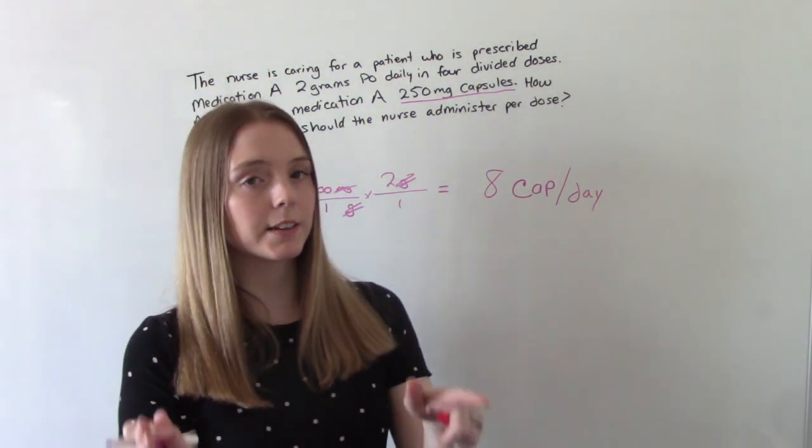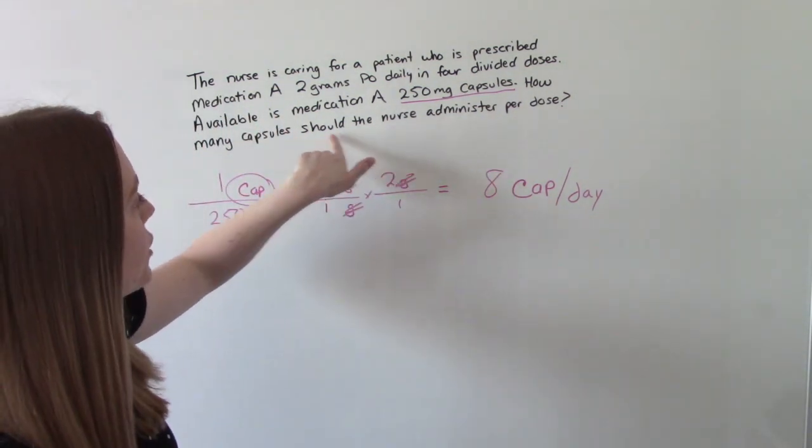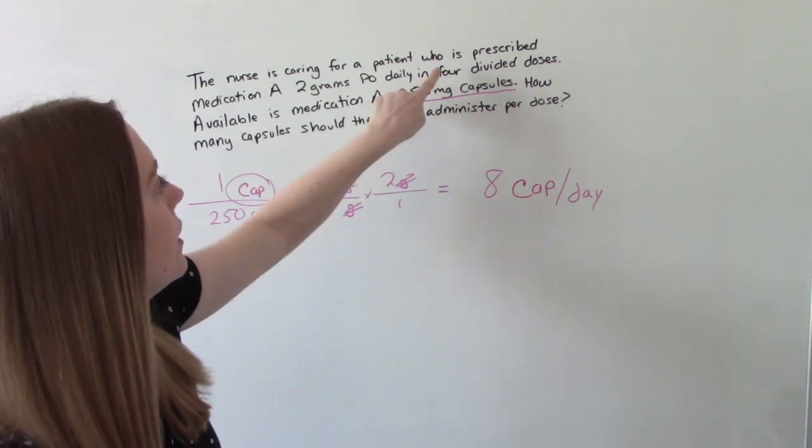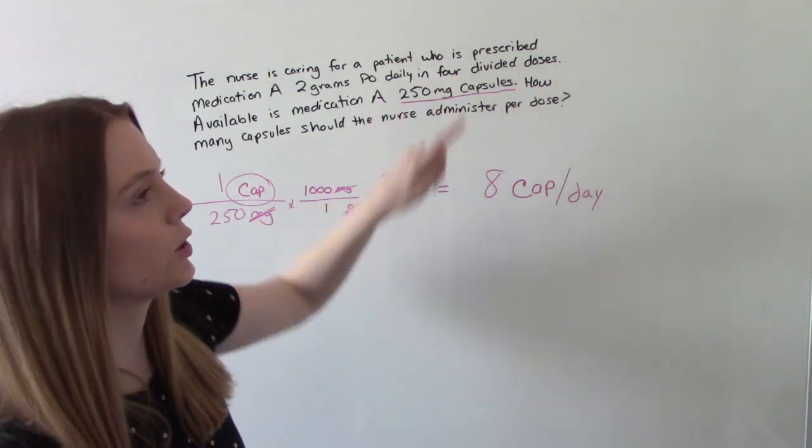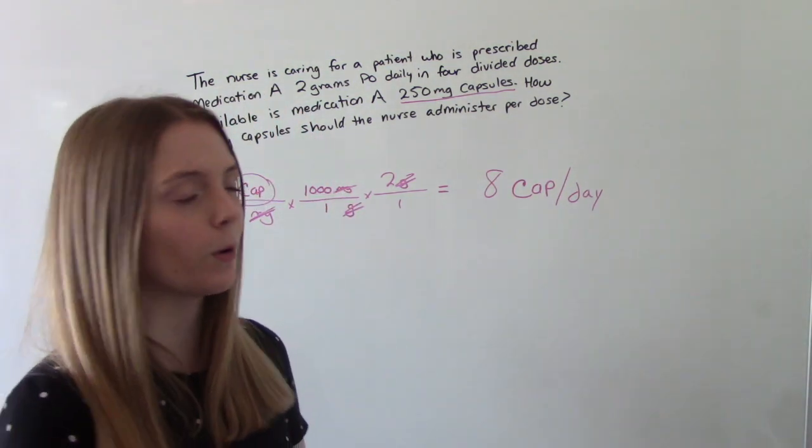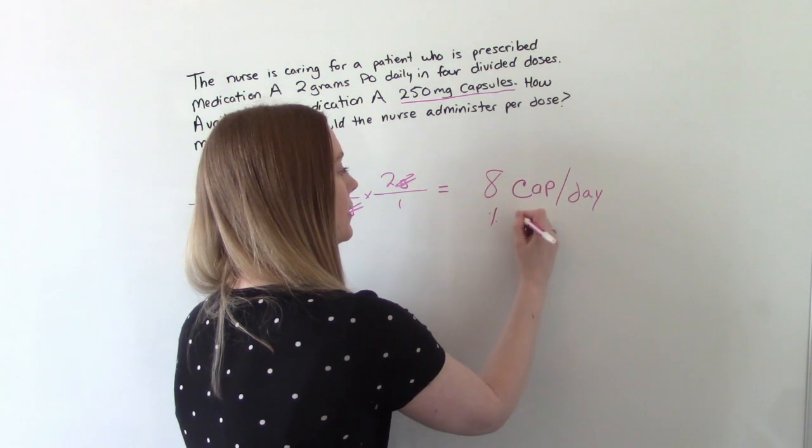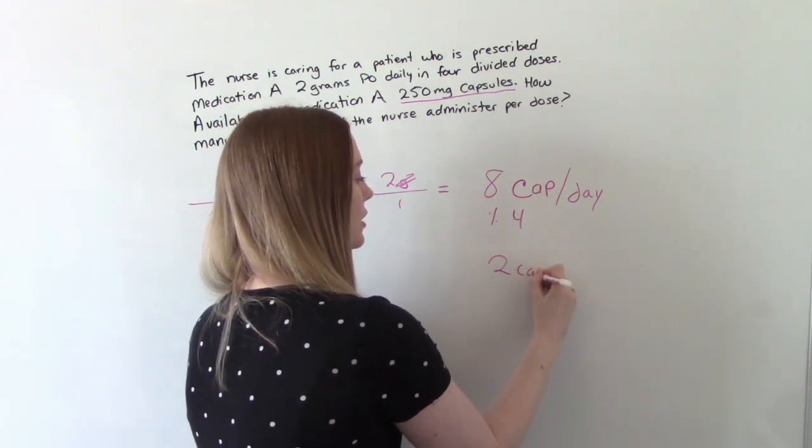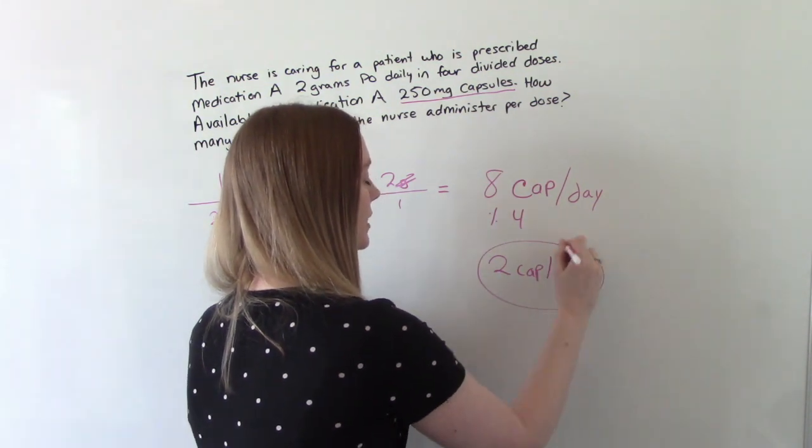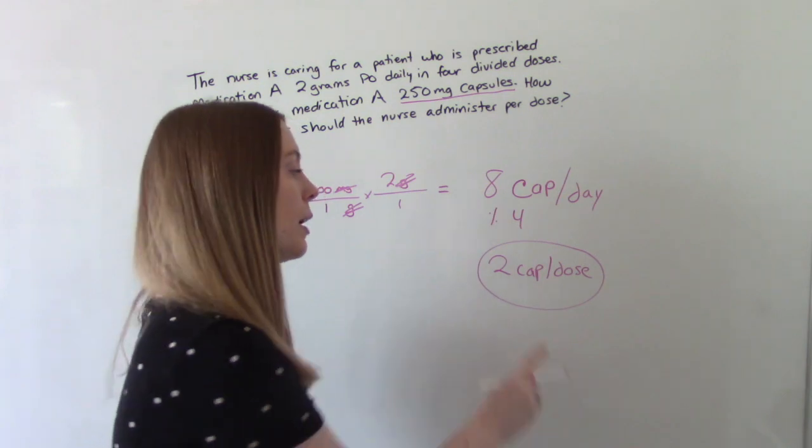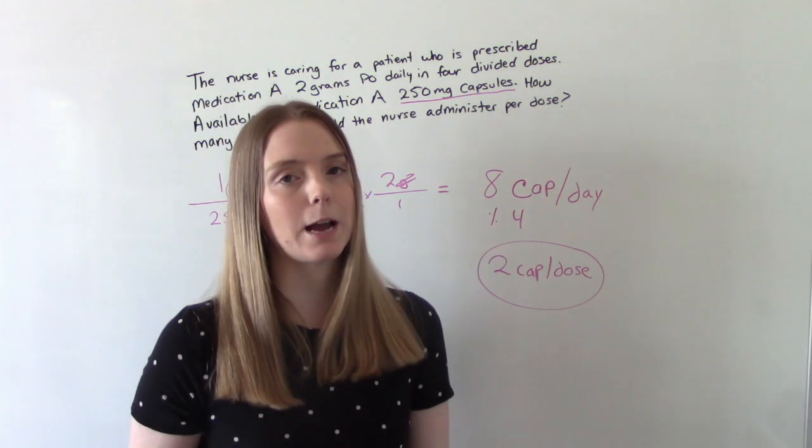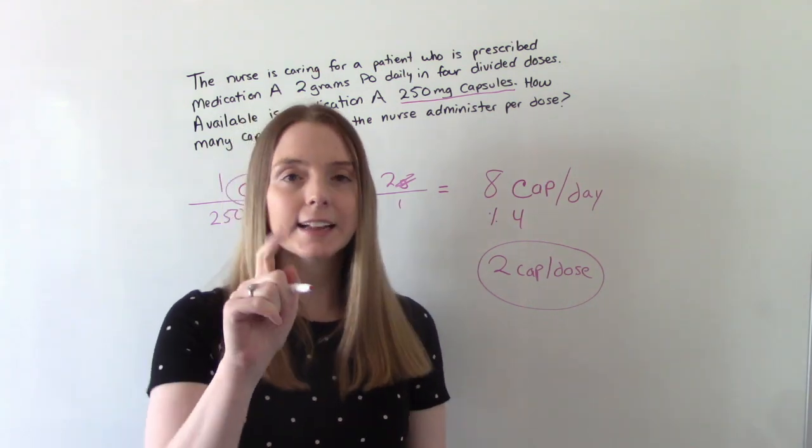The rest of the problem is asking, how much should the nurse administer per dose? So how many doses? Four divided doses. So every six hours, they're getting this. So we need to divide this by four. So eight divided by four is two. So they're getting two capsules per dose. So each time they get this medication, every six hours, they're going to receive two capsules, which all day, they'll receive eight total capsules.